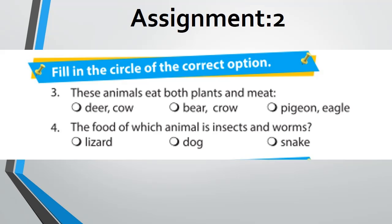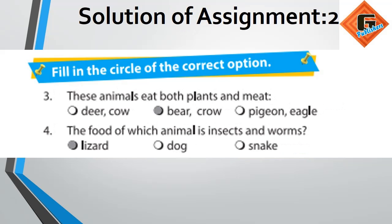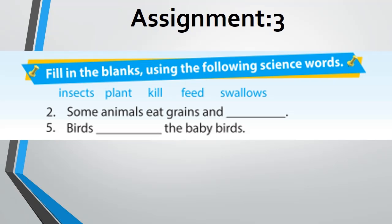Which animal's food consists of worms and insects? Options are: lizard, dog, and snake. Fill the circle of the correct option. The solution is also given, you can take help from here.